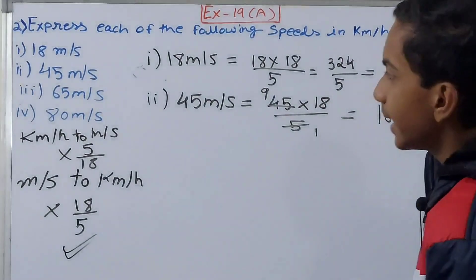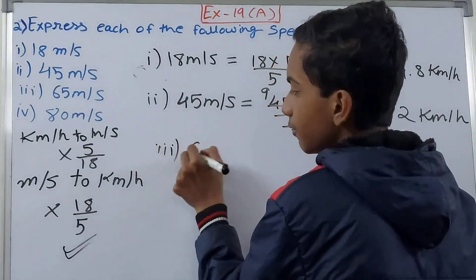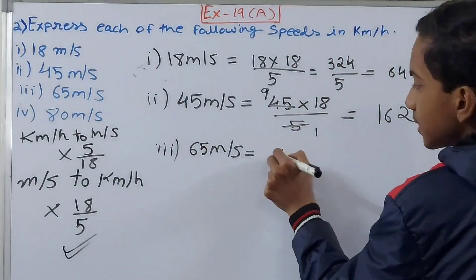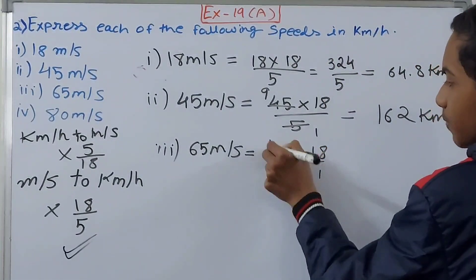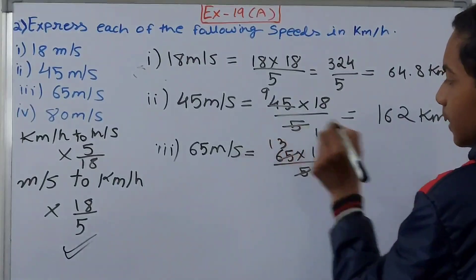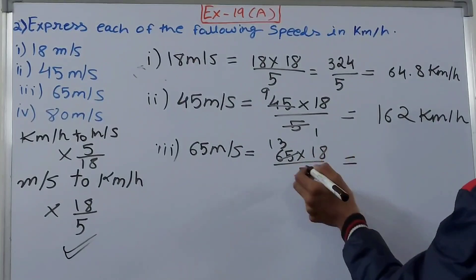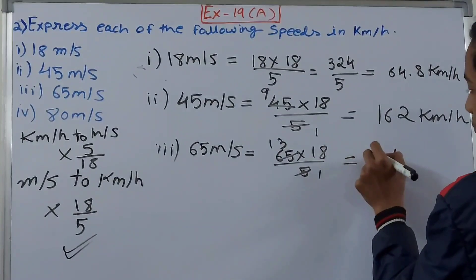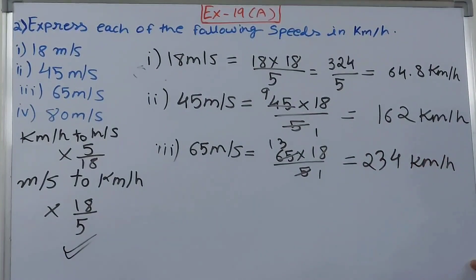The third is 65 meters per second. Again, 65 × 18/5. Cancel to get 13 × 18, which equals 234 kilometers per hour. I'm doing these calculations mentally - if you're facing difficulty you can write it out, no problem.